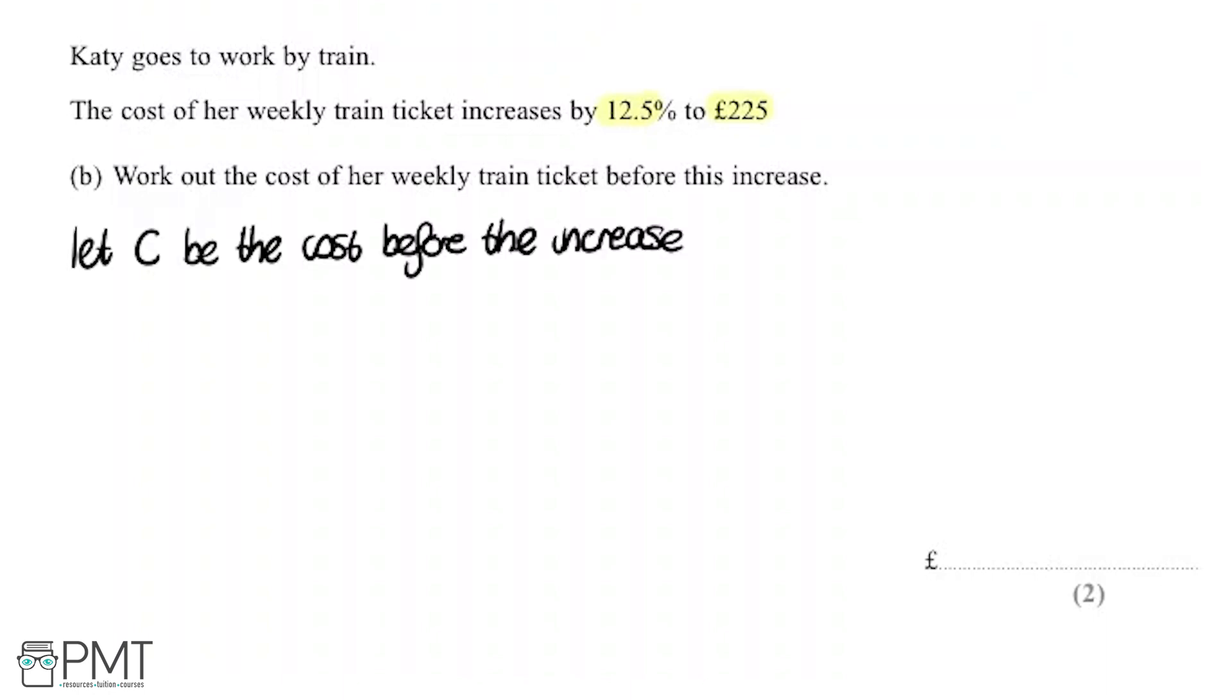Firstly, I'm going to let C, the variable C (that could be any letter, I've just called it C), be the cost before the increase. We're going to create an equation that we can solve for this. The cost before the increase is C, that's what we want to work out.